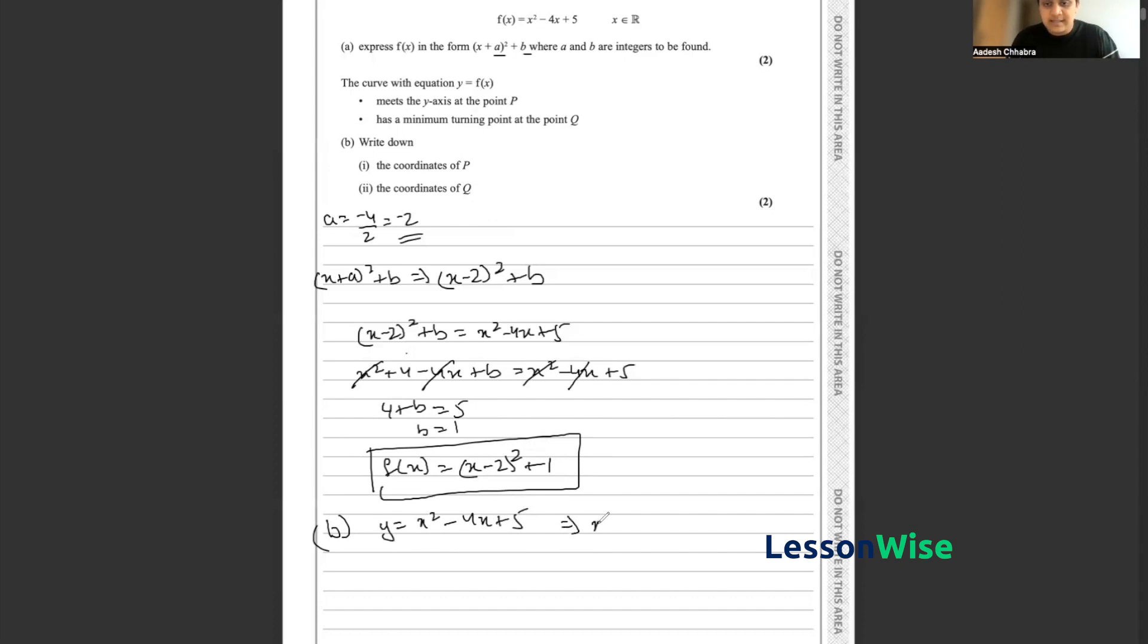If we substitute x = 0, we know that y = 0² - 4(0) + 5. Thus y = 5. And this yields us the coordinates of p to be (0, 5).